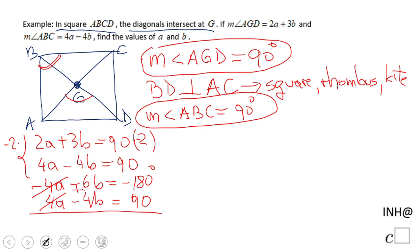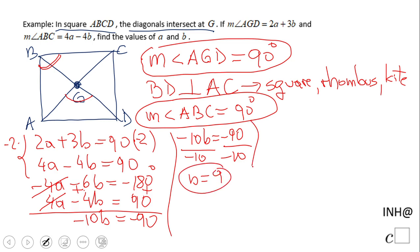I get negative 10b equals negative 90. If we divide by negative 10 on both sides, we get b equals 9.